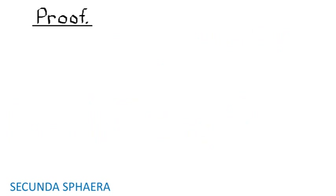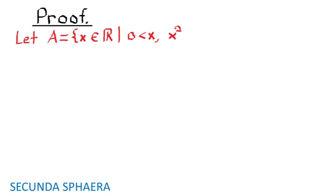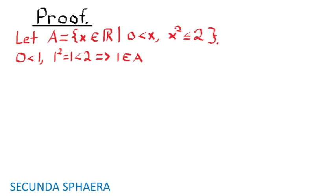It is time to start the proof. It is meant to use the supremum axiom, so it is necessary to start with a subset of the real numbers. Let A be the set of real numbers greater than 0 whose square is less than or equal to 2. Since 0 is less than 1 and the square of 1 equals 1, which is less than 2, 1 is in A. Hence, A is non-empty.